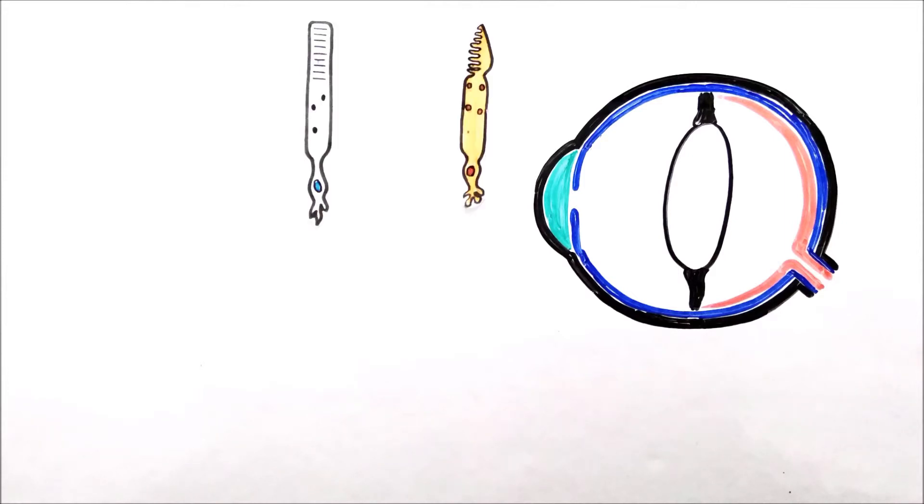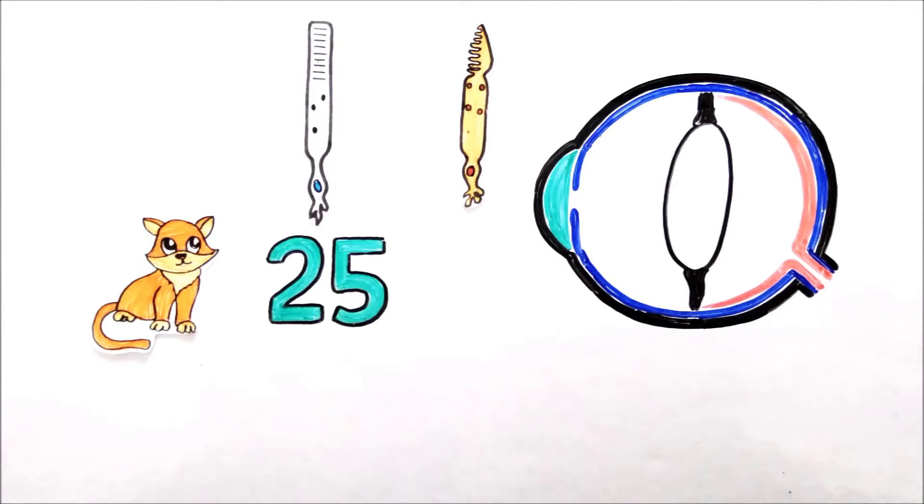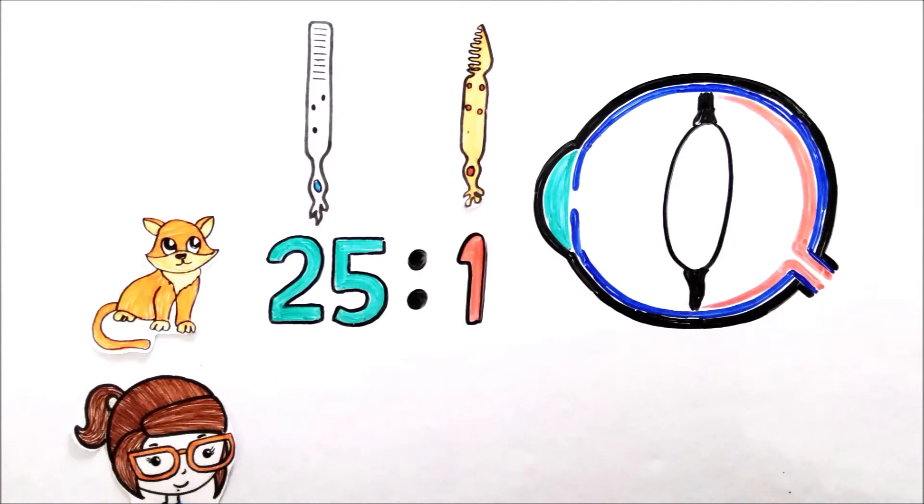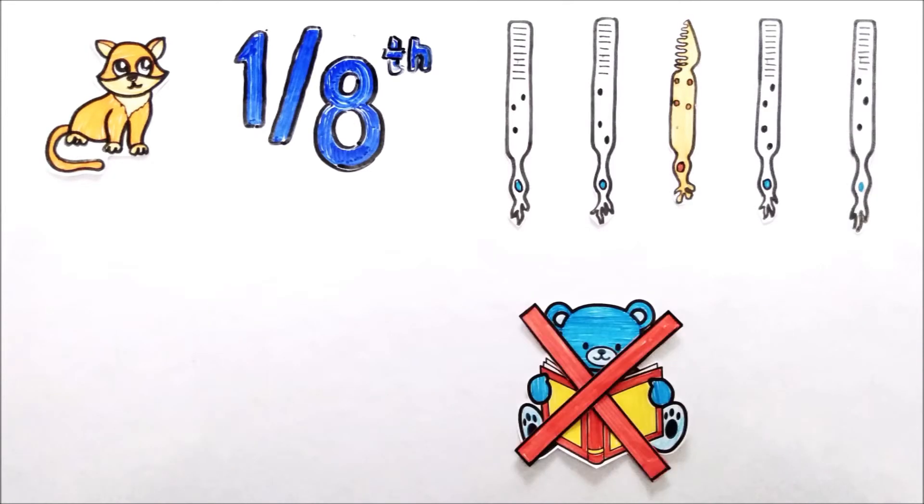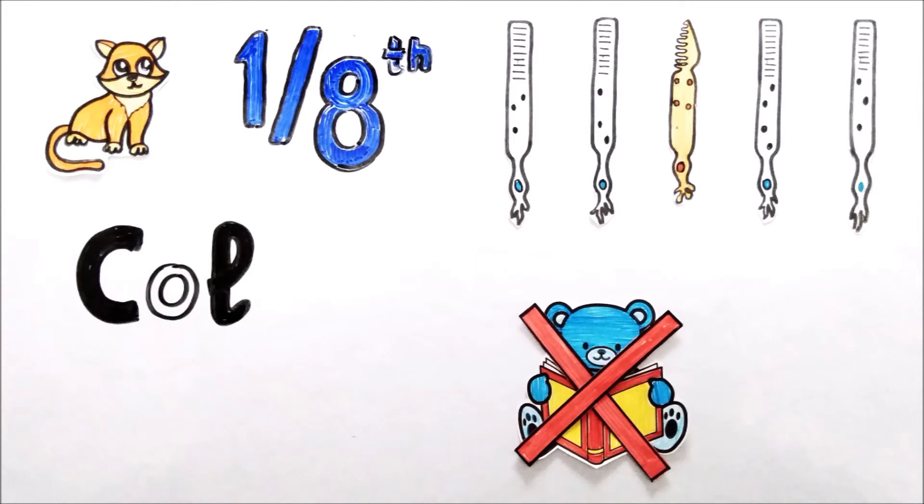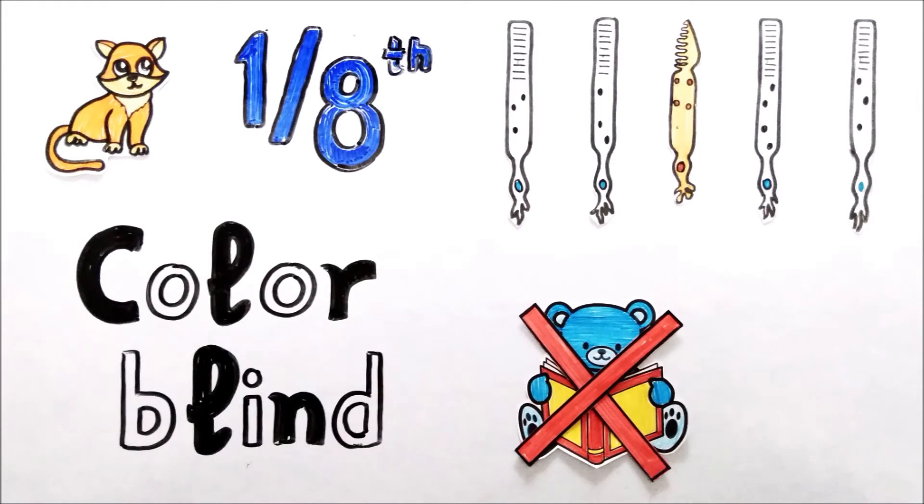They have a high rod to cone ratio. For example, cats have a 25 to 1 ratio of rods to cones, which is only 4 to 1 for humans. It means cats only need one-eighth amount of light to see in dark compared to humans. But lack of cones also means that they don't get a good colored vision. This is the reason why nocturnal animals are generally color blind.